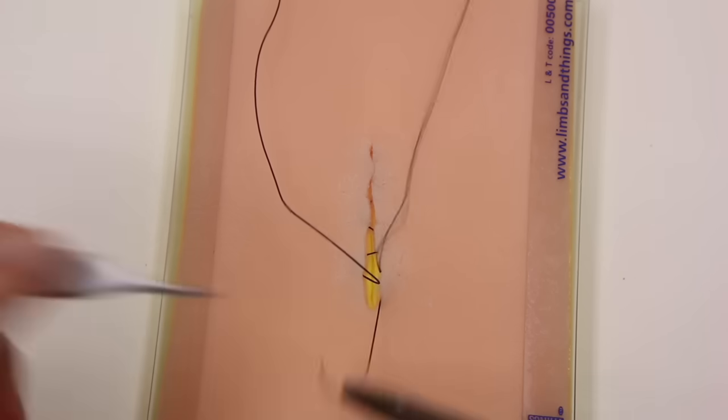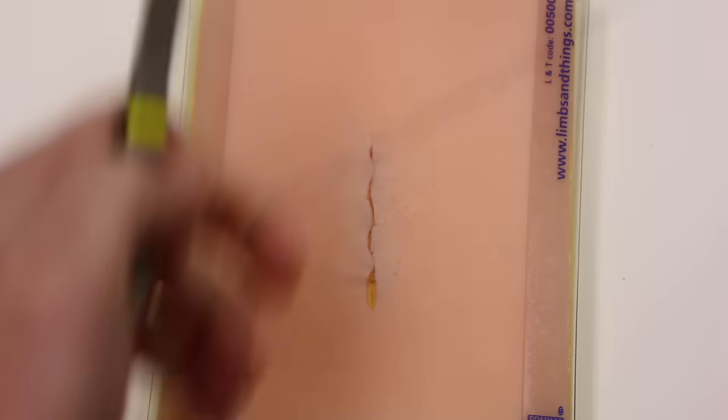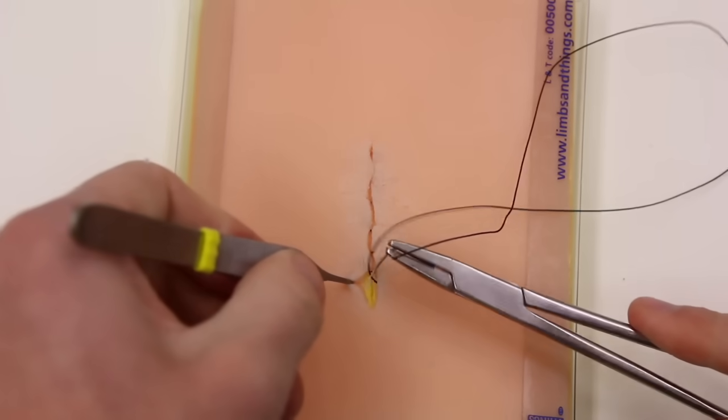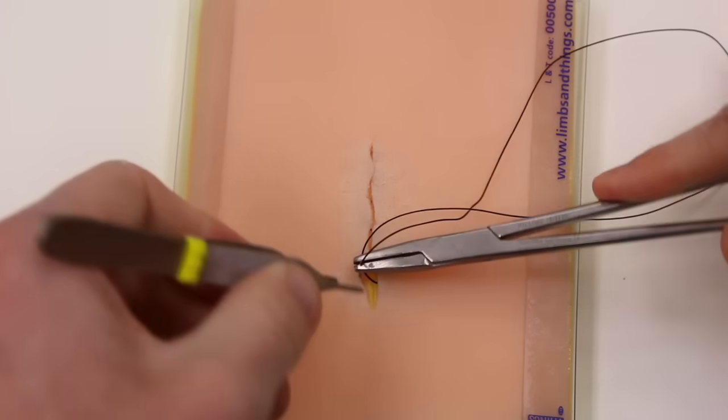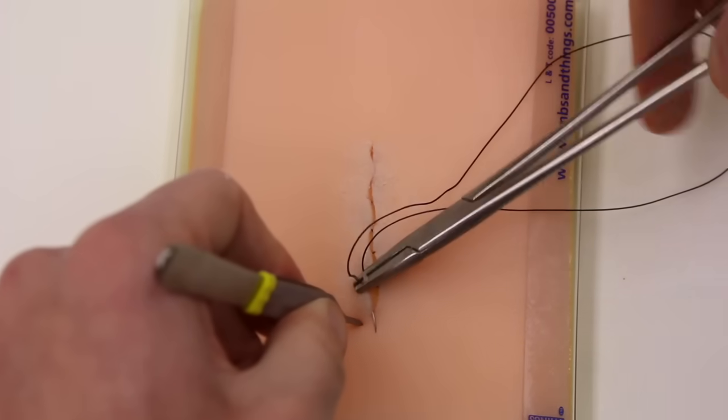So as you're nearing the end, taking smaller bites. One last stitch here at the skin edge. Going out through the apex of the incision.